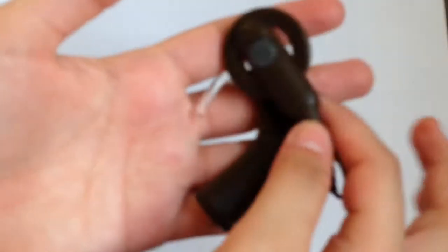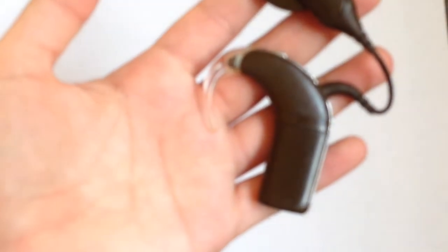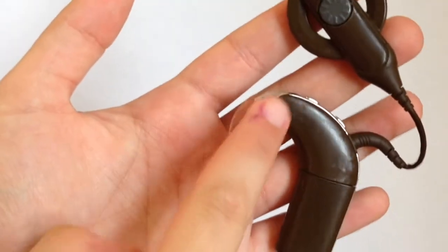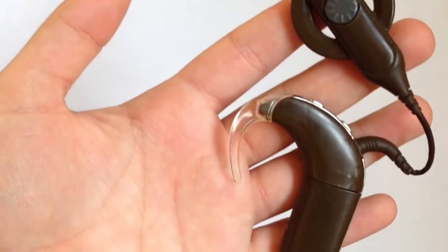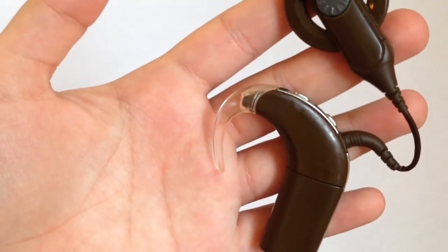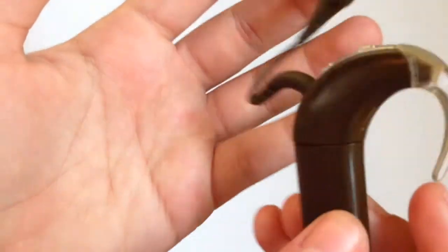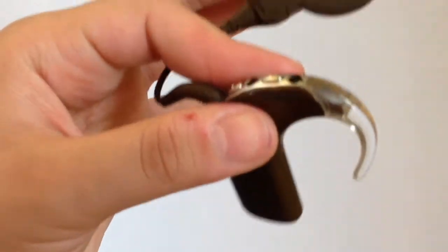Okay, so as you guys can see, this is the Nucleus 5 Cochlear Implant that I have with me right now. And this over here, this plastic thing, that's called the hook, and that is what helps keep the cochlear implant on your ear or on whoever is wearing it. So, it's on really, really tightly.